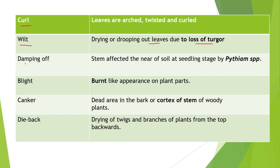Next term is damping off: when the stem is affected near the soil at seedling stage by Pythium species. Next is blight: a burnt-like appearance on plant parts. Next is canker: dead areas in the bark or cortex of stem of woody plants. Next is dieback disease: the drying of twigs and branches from the top backwards.